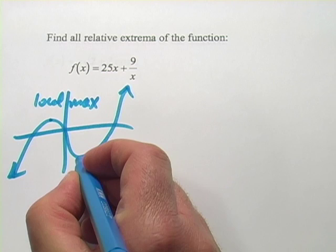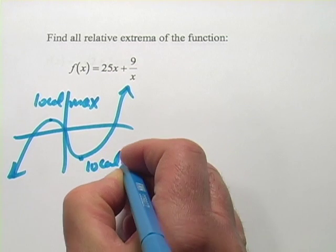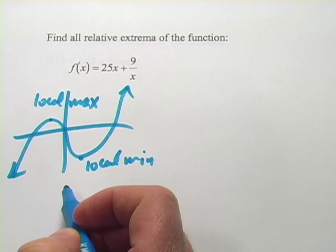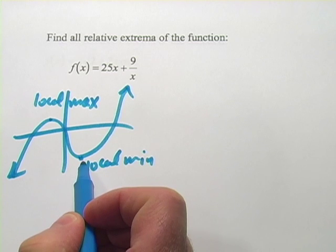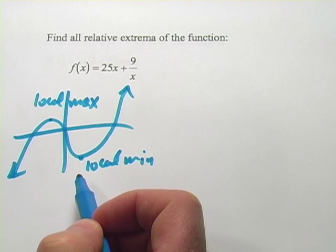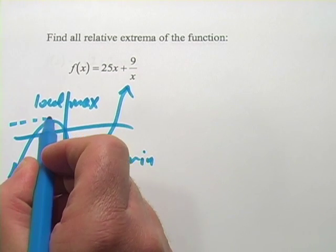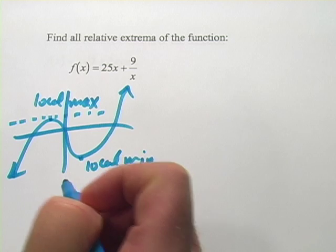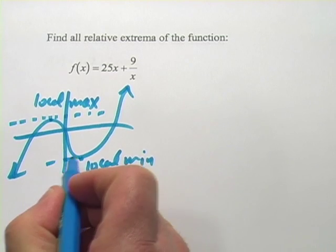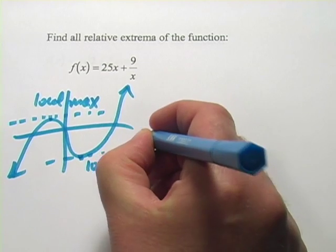And likewise, we have a local min. If you look to the left and the right, everything's going uphill. These points are the relative extrema. And they're pretty easy to find really because, as you can probably tell from the graph, the slope of the tangent line for a local max or a local min is going to be zero.